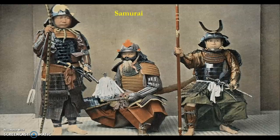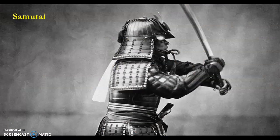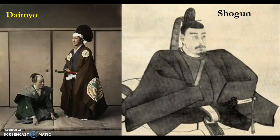Here are pictures of how samurai used to dress and another example of samurai fighting with swords. On the left are pictures of the daimyo, the landowners — as you can see they are dressed more fancy with nice clothing. On the right is a picture of the shogun, the top leader who ran the country.